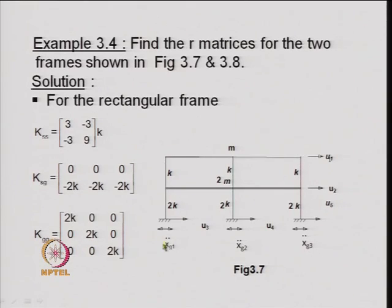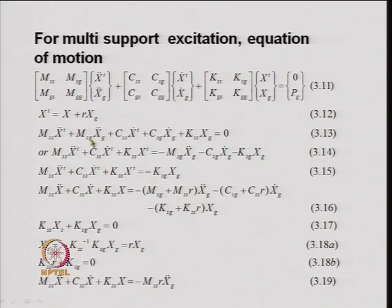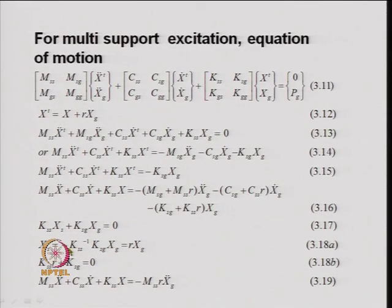Next, we wanted to explain how the R matrix is generated. The R matrix is generated with the help of this equation: R = minus K_ss inverse into K_sg, where K_ss inverse is the partitioned stiffness matrix corresponding to the non-support degrees of freedom, and K_sg is the coupling matrix between the non-support degrees of freedom and the ground degrees of freedom. Once you have these two matrices, one can construct the R matrix.